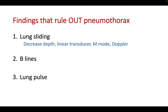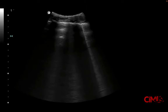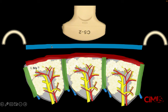The second finding that will rule out pneumothorax is the presence of B-lines — hyperechoic vertical lines composed of multiple horizontal reverberation artifacts. B-lines are thought to arise from thickened interlobular septal lines. If you have a layer of air between the parietal and visceral pleura, no amount of thickening can be visualized because the air will reflect all transducer sound waves back.